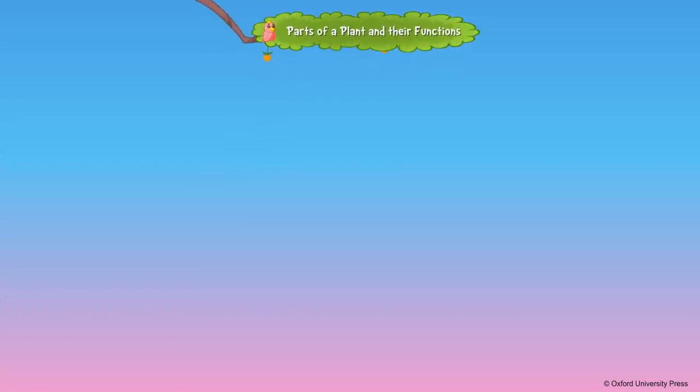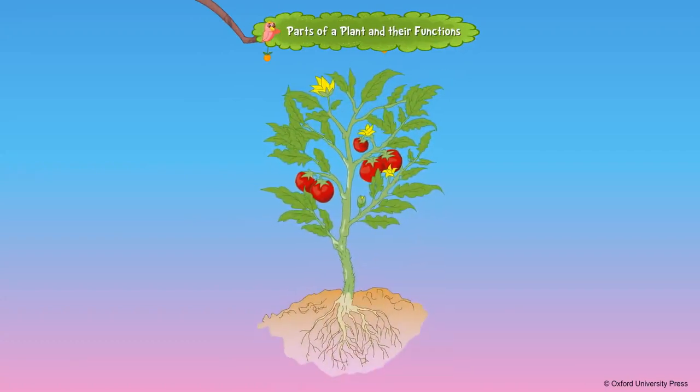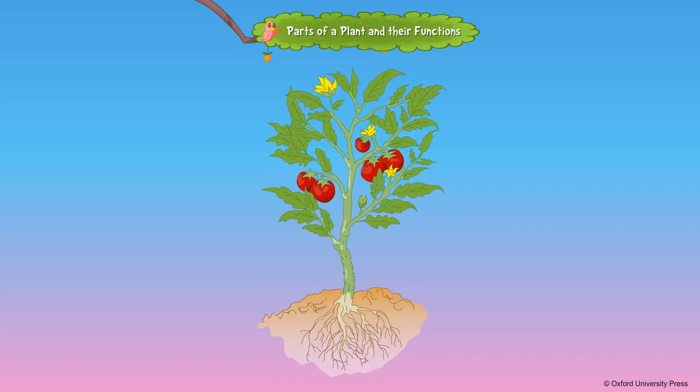Parts of a plant. Root is the most important part of the plant, which supports the plants above the ground and supplies water and minerals from the soil to the other parts of the plant.